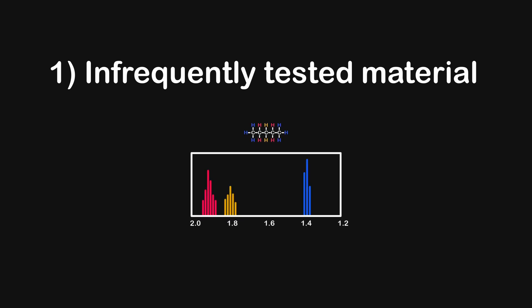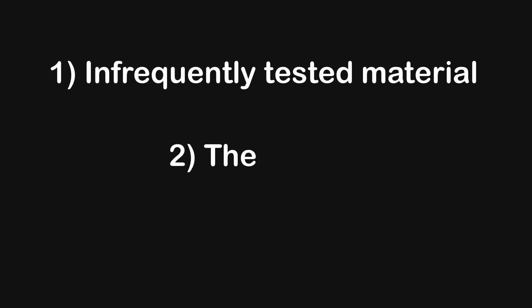But what is low-yield? For me, it falls into two categories. Number one: topics that don't come up super often in the AAMC practice materials. There's going to be things like NMR — we only have one question on that, compared to the 20 that we see on amino acids. And number two: the finer details within a higher-yield topic.